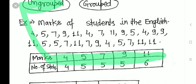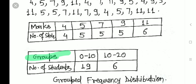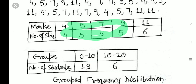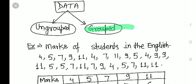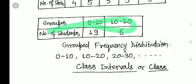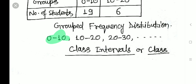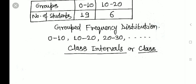If we represent the same data using ranges — groups like 0–10, 10–20 — then the number of students scoring between 0 and 10 (marks 4, 5, 9, etc.) totals 19, and those scoring between 10 and 20 (mark 11) total 6. When data is represented in this form it is called grouped data, and the table is called a grouped frequency distribution table. These groups are also called class intervals.